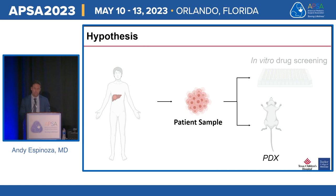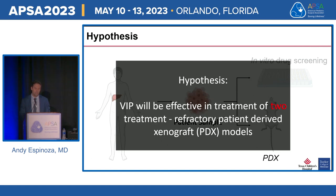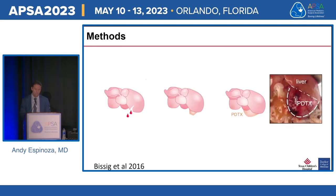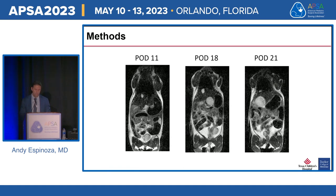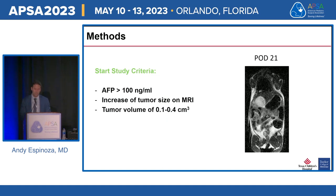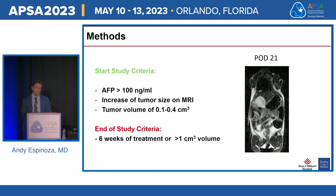To further test this drug combination, we created two chemo-resistant patient-derived xenograft, or PDX, models, hypothesizing the VIP combination — vincristine, irinotecan, and panobinostat — would be effective in these treatment-refractory models. PDXs were created using orthotopic implantation, tracked with weekly MRIs, and AFP levels were drawn from the facial vein to confirm hepatoblastoma PDX development. Drug studies began when AFP exceeded 100 ng/mL, with tumor burden of approximately 0.1 to 0.4 cm³ in mice. Mice were euthanized after six weeks or when tumor burden reached 1 cm³.